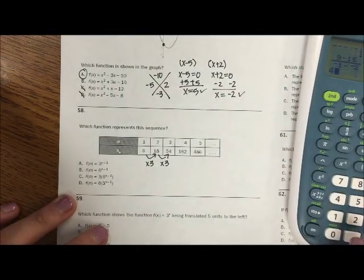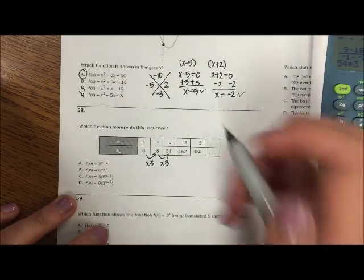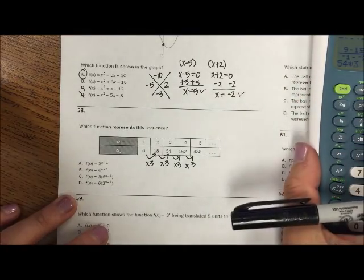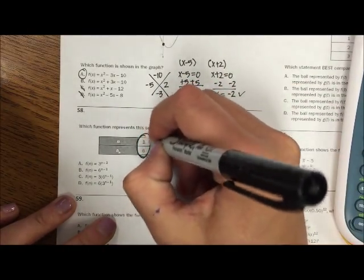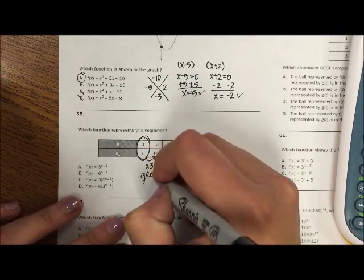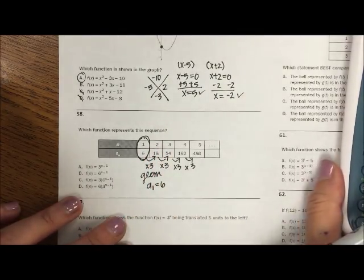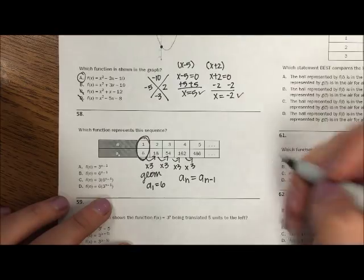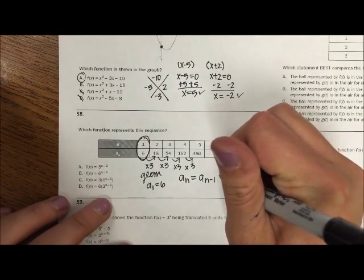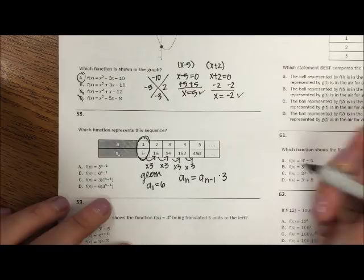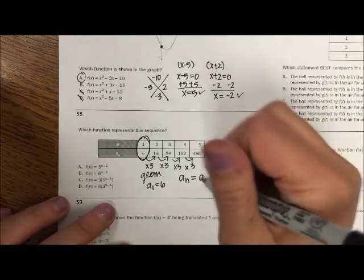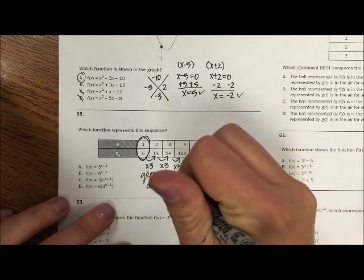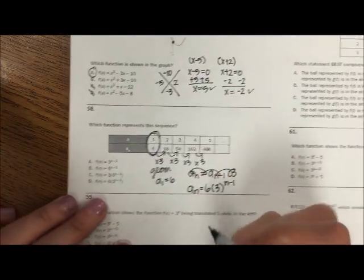To get from 54 to 162, yep, multiply by 3. And the pattern continues. Okay, so I can see that I'm multiplying by 3. Here's my starting point. So it's geometric. My a sub 1 is 6. Okay, so geometric, and these are all recursive, says a sub n minus 1 times how you change. I'm changing by 3. Okay, and my starting point is 6.